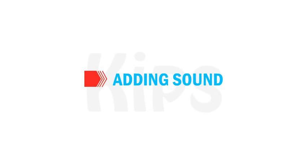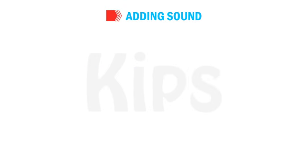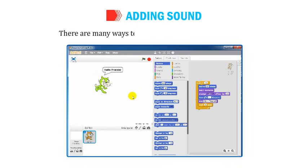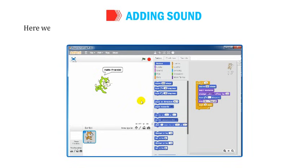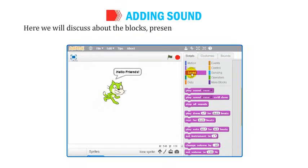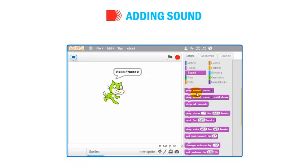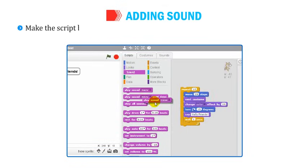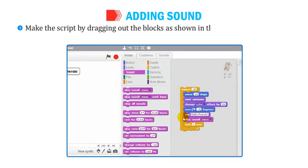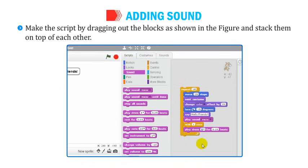Let us find out how to add sound in Scratch. There are many ways to add sound to your Scratch project. Here we will discuss the blocks in the Sound Block menu used to add sound. Make the script by dragging out the blocks and stacking them on top of each other.